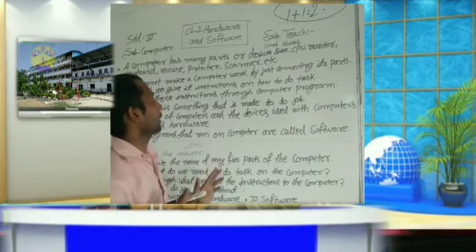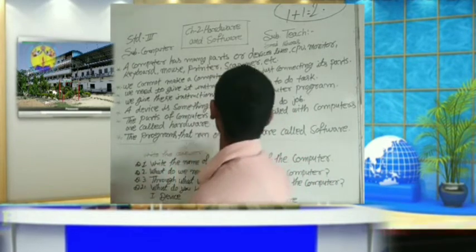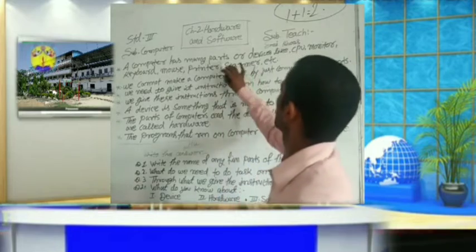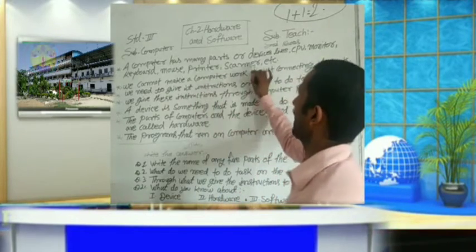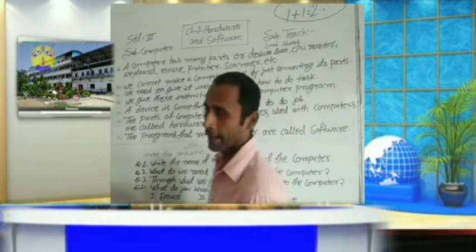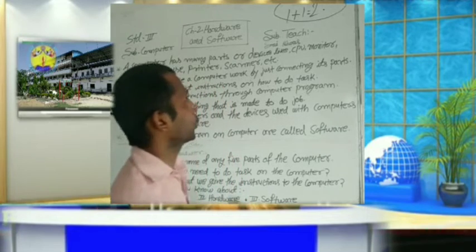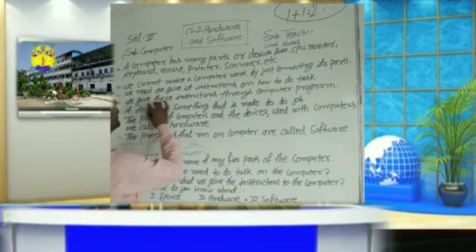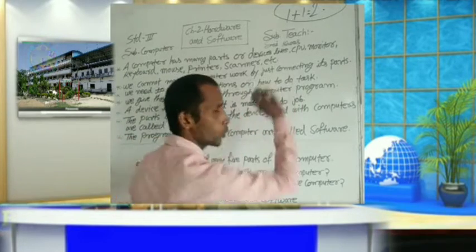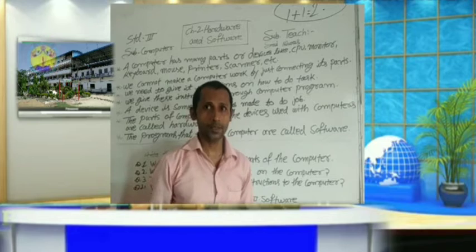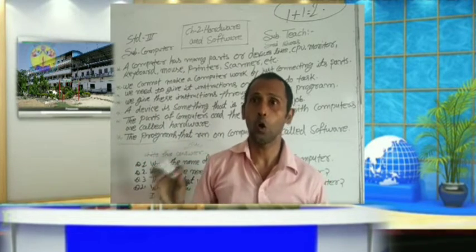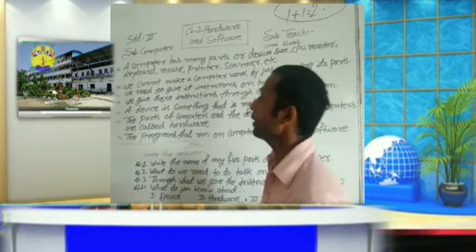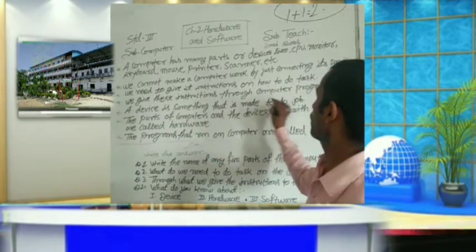We cannot make a computer work by just connecting its parts. Even if we have parts like CPU, monitor, keyboard, mouse, printer, and scanner, we cannot do our work on it because we need to give it instructions on how to do tasks. We give these instructions through computer programs.